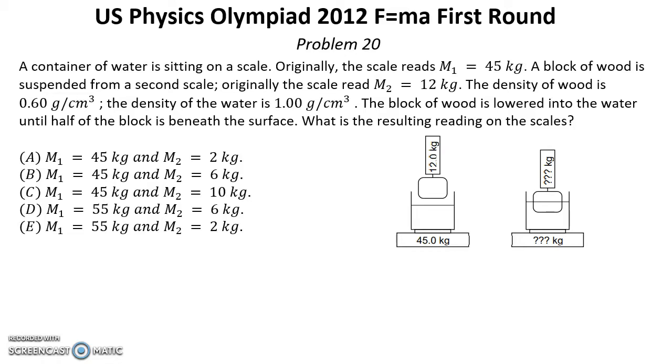Solution: In this problem we just need to count what is the buoyancy force acting on this block from water. First, because we know the mass of this wooden block and the density of this wood, we can count the total volume of this block. After that we can count half of this volume and then the buoyancy force from water in the second case.